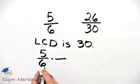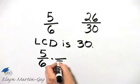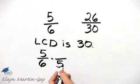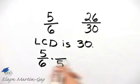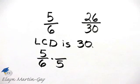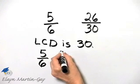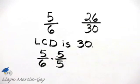Notice if I multiply 6 by 5, 6 times 5 is 30, so I have a denominator of 30, which is what I want. If I multiply the denominator by 5, which is essentially what I'm doing here in just a moment, I must also multiply by 5 in the numerator.